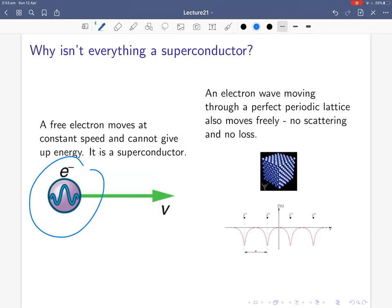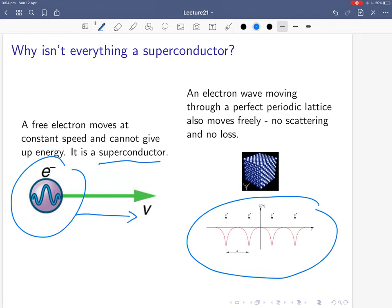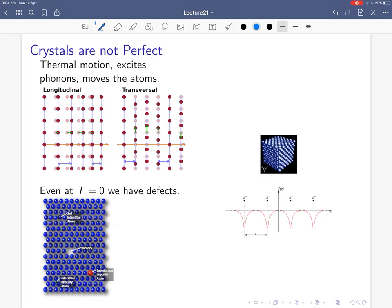Some background. First, we need to explain why isn't everything a superconductor? A free electron moving in free space at constant speed, if it's not accelerating, can't give up energy. An electron wave moving through a perfect periodic lattice, like you have in a solid state system, if the lattice is periodic, there's no scattering and no loss. There can be no loss in a perfect crystal. That's what you expect - everything's basically a superconductor.